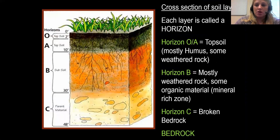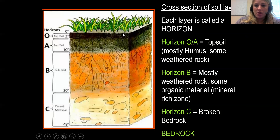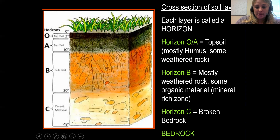Here's a cross-section or profile of the soil layers, and each layer is called a horizon. Horizon A at the top includes the topsoil — mostly humus and some fine weathered rocks. Horizon B is mostly weathered rock, and you might also see some organic material leached down from horizon A. Horizon C shows broken bedrock with very large rocks. Below horizon C is solid bedrock, so horizon C is essentially the parent material.